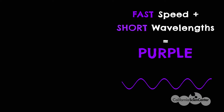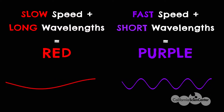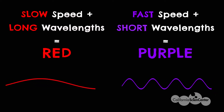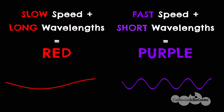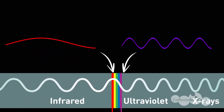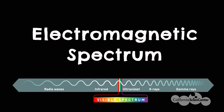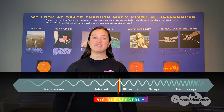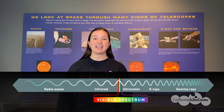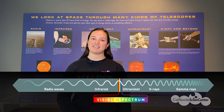For example, fast short waves create light we see as purple, and long slow waves create light we see as the color red. But there are even more types of light laid out here in what we call the electromagnetic spectrum. All of these types of light have different purposes in different types of spacecraft.